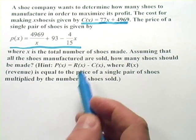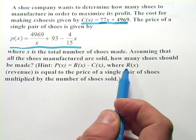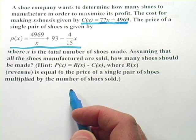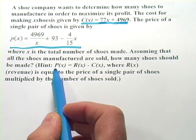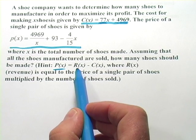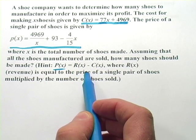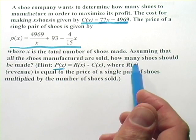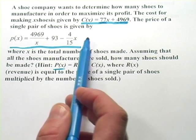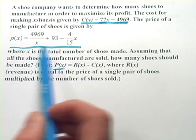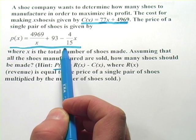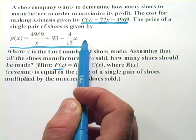Now it says assuming that all the shoes manufactured are sold, how many shoes should be made to maximize the profits? And they're giving a hint here. They're saying that the function P of x, that would be profit, is the revenue minus the cost and revenue is how much money you take in and that's the number of shoes you sell times the price of your shoes. So you'd actually have to multiply this price function by the number of shoes that you sold and the number of shoes is x.